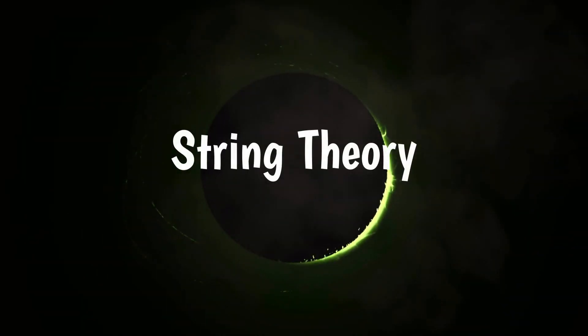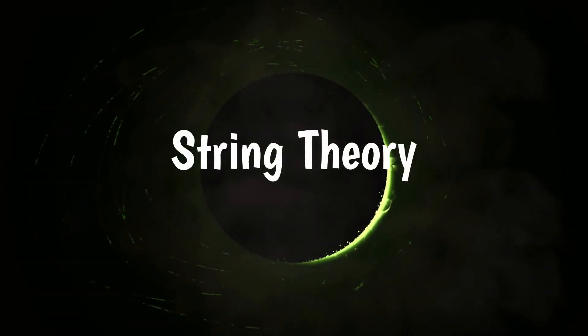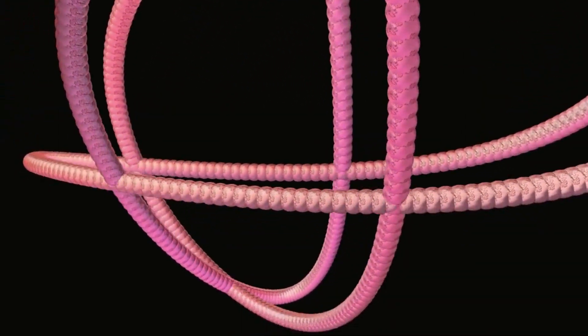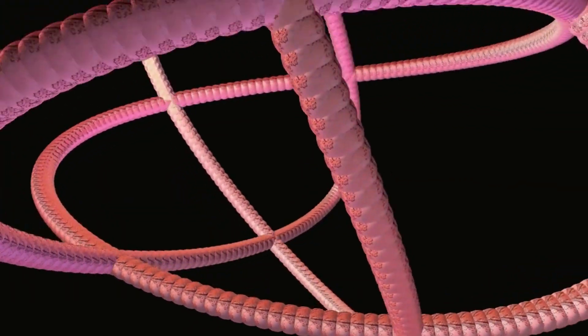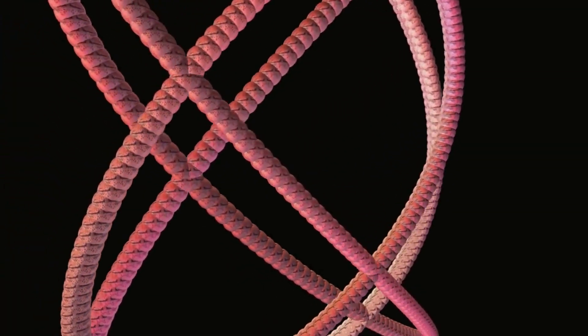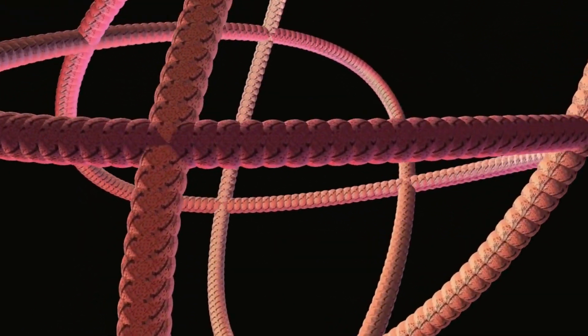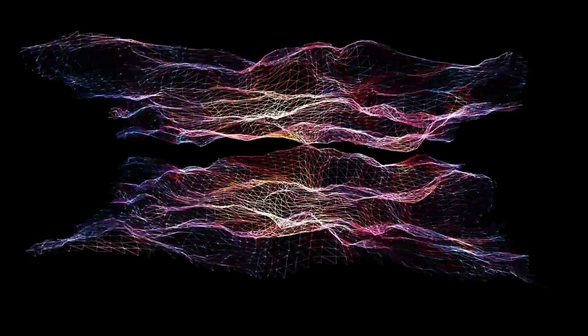In string theory, black holes are envisioned as surrounded by a fuzz of strings. These strings are like tiny, vibrating loops that can have different modes of vibration, similar to the strings on a musical instrument. The specific way these strings vibrate determines the properties of the particles they represent.